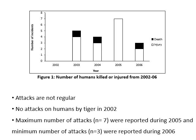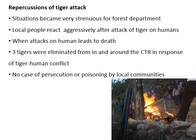This graph provides the number of humans attacked by wildlife during different years of the study period. During 2002, no human attack by wild animal was recorded, showing that attacks are not regular. The maximum number of attacks were reported during 2005, while the minimum number were reported during 2006.